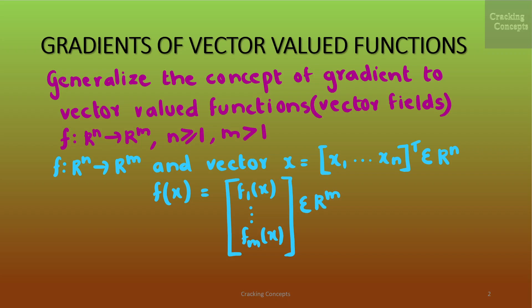Here we will be generalizing the concept of the gradient to vector valued functions, also known as vector fields. F is a mapping from n-dimensional to m-dimensional space where n is greater than or equal to 1 and m is greater than 1. For a function f from ℝⁿ to ℝᵐ and a vector x = [x1, ..., xn]ᵀ belonging to ℝⁿ, the corresponding vector of function values is given by f, i.e. [f1, ..., fm]ᵀ all belonging to ℝᵐ.